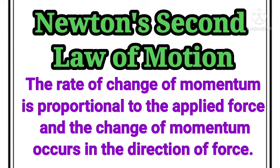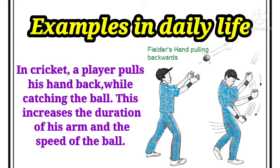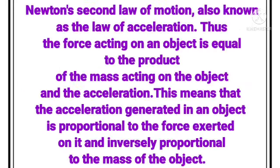Newton's Second Law of Motion: The rate of change of momentum is proportional to the applied force, and the change of momentum occurs in the direction of force. Examples in daily life: in cricket, a player pulls his hand back while catching the ball — this increases the duration of impact and reduces the speed of the ball. Newton's Second Law is also known as the Law of Acceleration. The force acting on an object is equal to the product of the mass of the object and its acceleration.